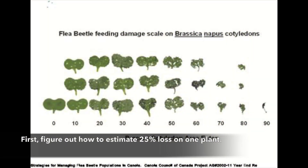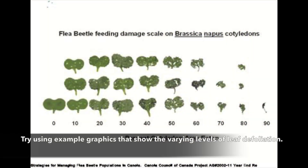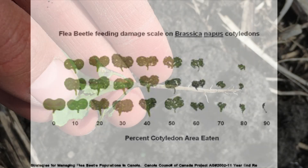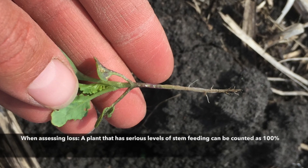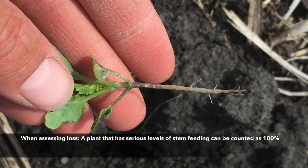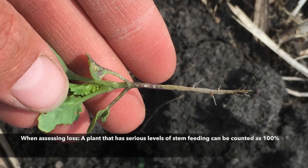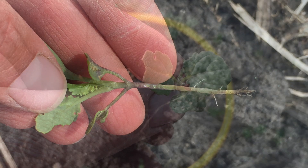First, figure out how to estimate 25% leaf loss on one plant. This isn't a perfect science, but try using example graphics that show the varying levels of leaf defoliation. An important note when assessing loss: a plant that has serious levels of stem feeding can be counted as 100%.